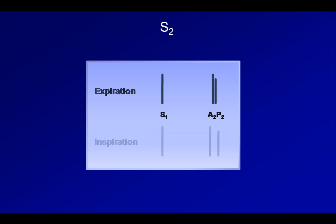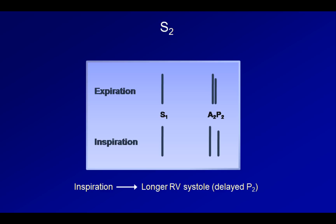The varying timing of A2 and P2 throughout the respiratory cycle is a function of two changes that occur during inspiration. First, the lower intrathoracic pressure during inspiration leads to increased right ventricular preload, which then increases the duration of RV systole, thus delaying P2. Second, the decreased LV preload during inspiration leads to shorter LV systole, and therefore an earlier A2. There are many different abnormalities of the splitting of S2. I'm going to quickly run through five of them. For reference, here is the normal S2 split.